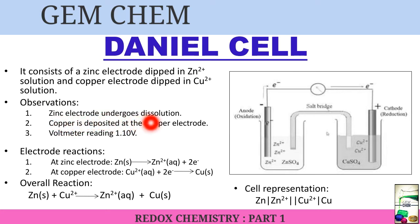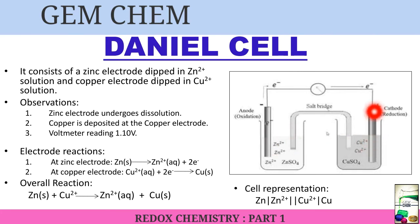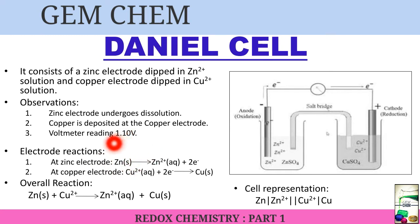In the Daniel cell, we observe that the zinc electrode undergoes dissolution, copper is deposited at the copper electrode, and the voltmeter reading is 1.10 volts. The electrode reactions are: at the zinc electrode, Zn(s) → Zn²⁺(aq) + 2e⁻, and at the copper electrode, Cu²⁺(aq) + 2e⁻ → Cu(s) deposited on the cathode.